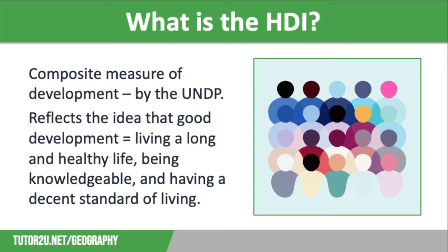The Human Development Index is a composite measurement of development. This means it takes a range of social and economic measures and combines them into one. This index is published by the United Nations Development Programme, or the UNDP, and was designed to reflect the idea that good human development involves people living long and healthy lives, being knowledgeable and having a decent standard of living — the things that we often take for granted in HICs.